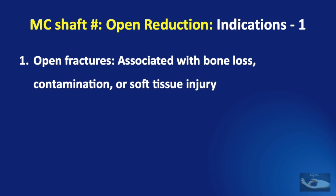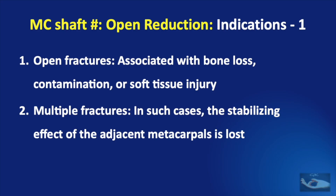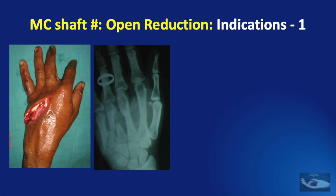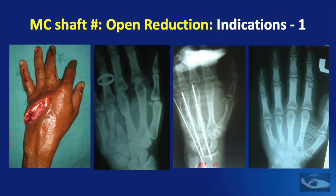Open fractures, especially if associated with bone loss, contamination, or soft tissue injury, are prime indications for open reduction. If there are multiple metacarpal fractures, open reduction is indicated since the stabilizing effect of adjacent metacarpals is lost and closed reduction will not be effective. It is easier to manage the wound and associated soft tissue injuries by open reduction.